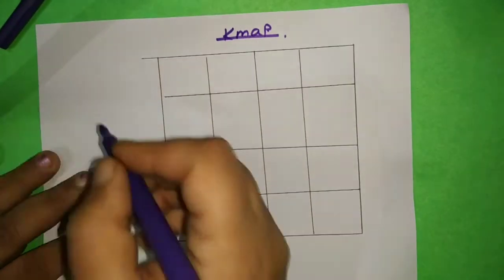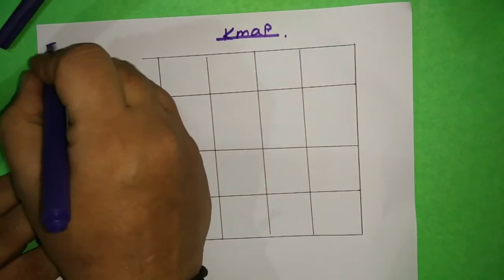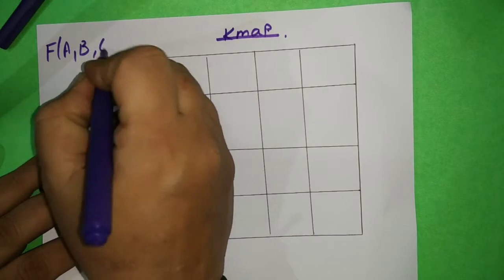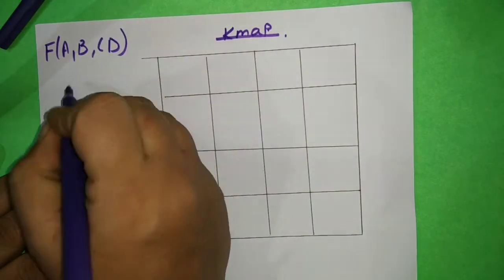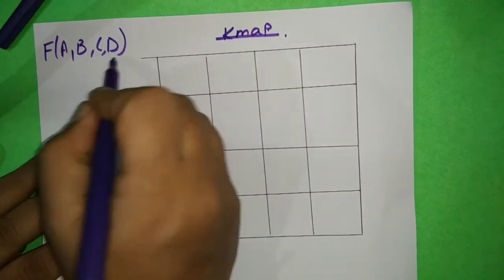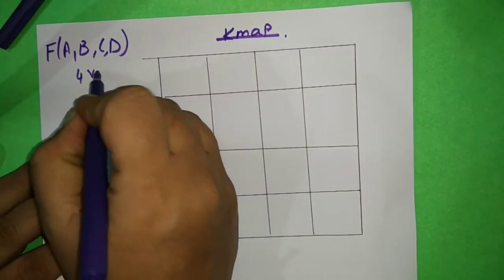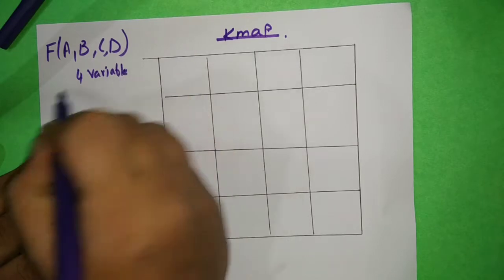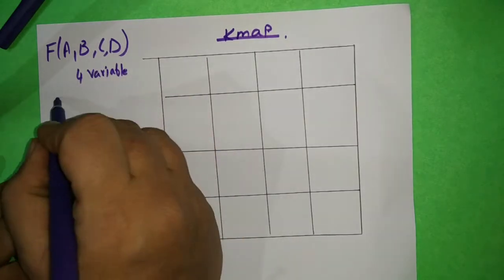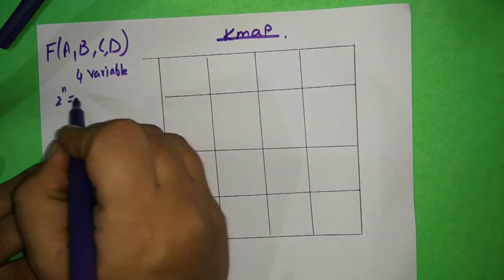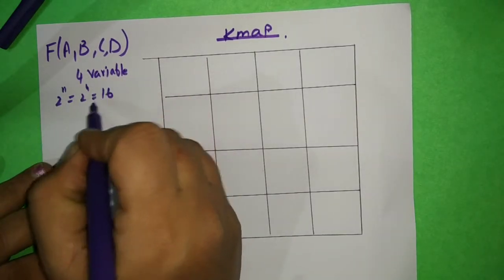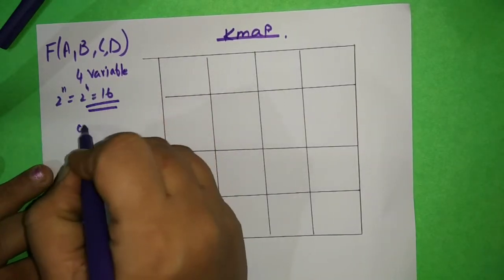Let us look at the K-map now. So, you have F with variables A, B, C, D — a 4-variable K-map. With 4 variables, you have to draw 16 cells, because 2 to the power N equals 2 to the power 4, which is 16.